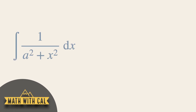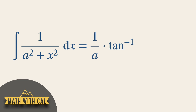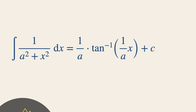Hello everyone, today we are going to deal with integrating such expressions: 1 over a squared plus x squared with respect to x. This always gives us 1 over a times tangent inverse of x over a, plus c, where c is an arbitrary constant.